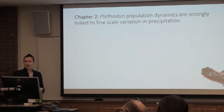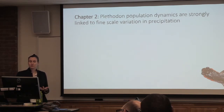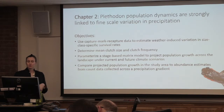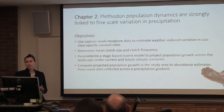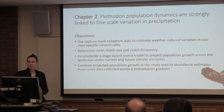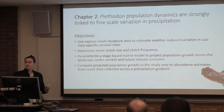So then we decided to look at Plethodon population dynamics from our own demographic data. We found a strong linkage between fine-scale variation in precipitation and population dynamics. We used capture-mark-recapture data to estimate weather-induced variation in size-class-specific survival rates. We also did a fecundity study to determine mean clutch size and clutch frequency. We parameterized a stage-based matrix model that allowed us to project population growth across the landscape under both current and future climate scenarios. Yes, it was a lot of steps.